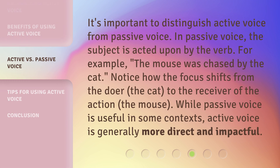It's important to distinguish active voice from passive voice. In passive voice, the subject is acted upon by the verb. For example, 'the mouse was chased by the cat.' Notice how the focus shifts from the doer, the cat, to the receiver of the action, the mouse. While passive voice is useful in some contexts, active voice is generally more direct and impactful.